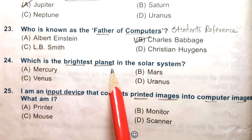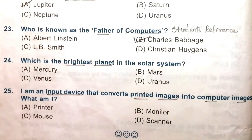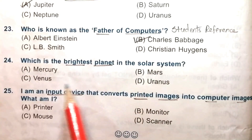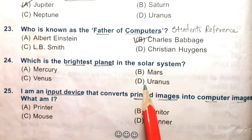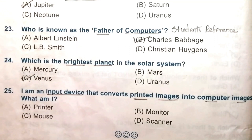Question 24: Which is the brightest planet in the solar system? Mercury, Mars, Venus, or Uranus. The answer is C, Venus.